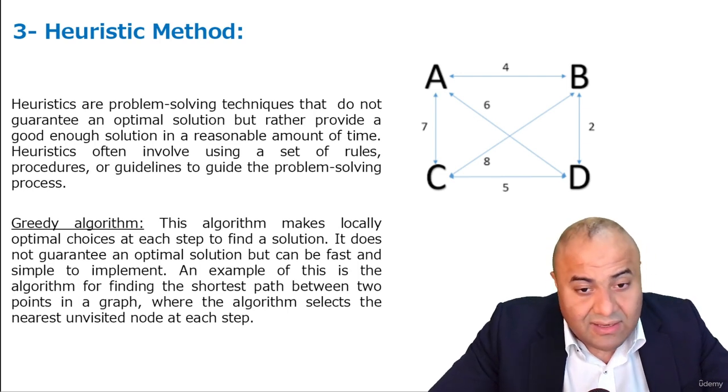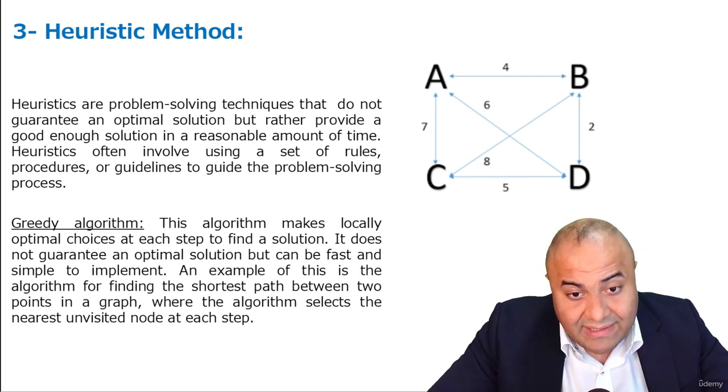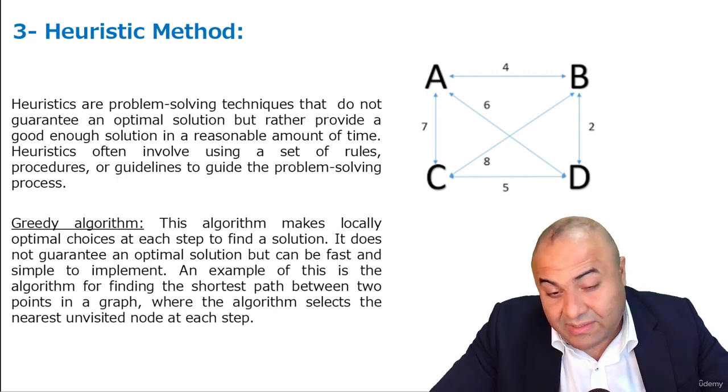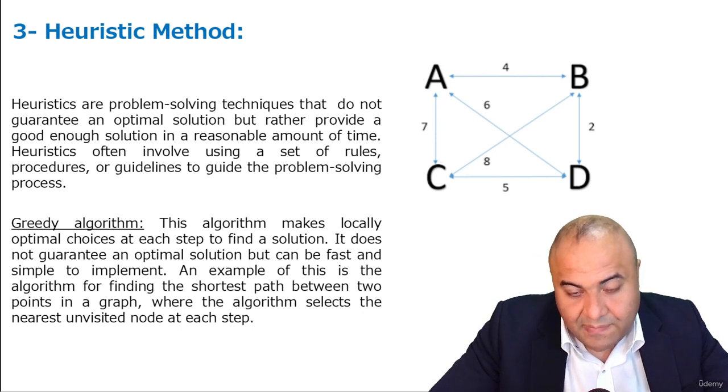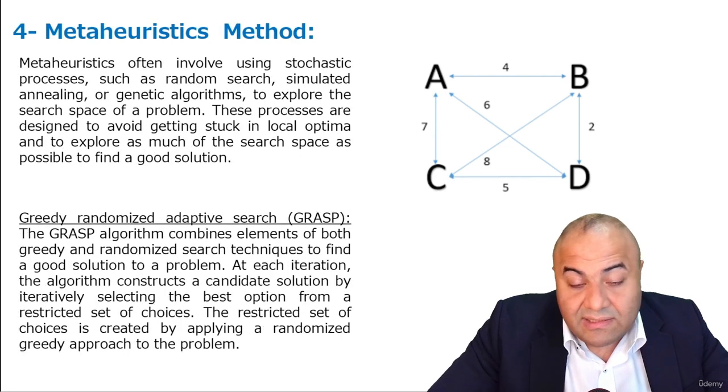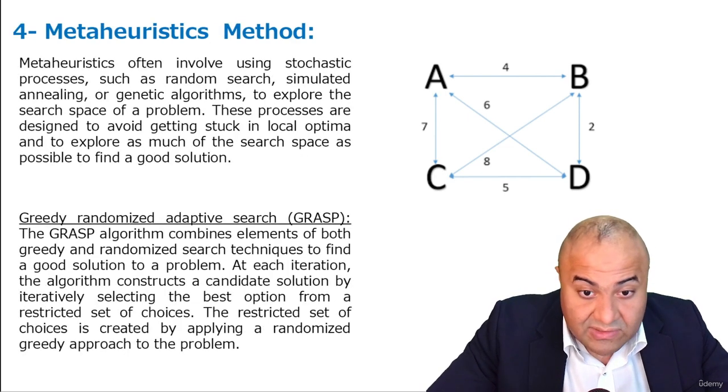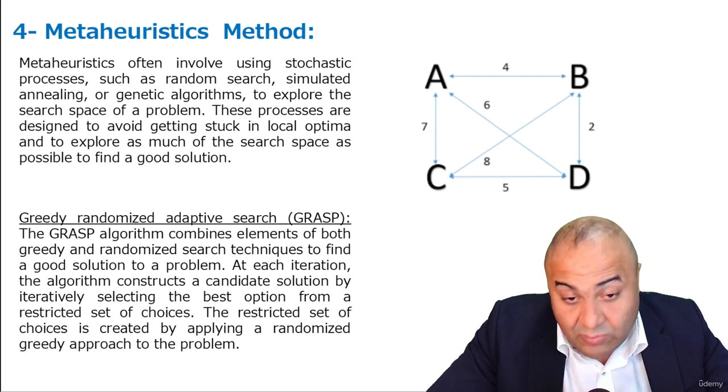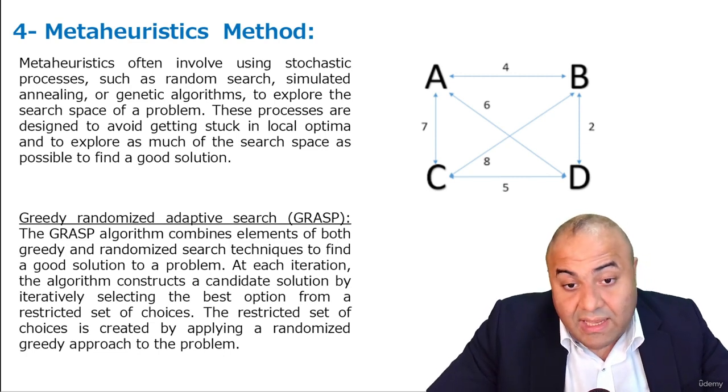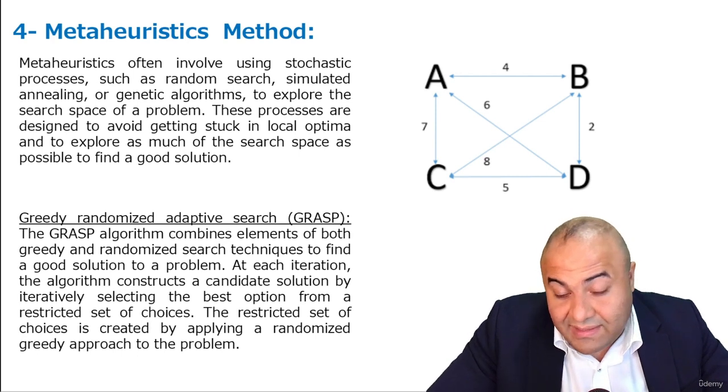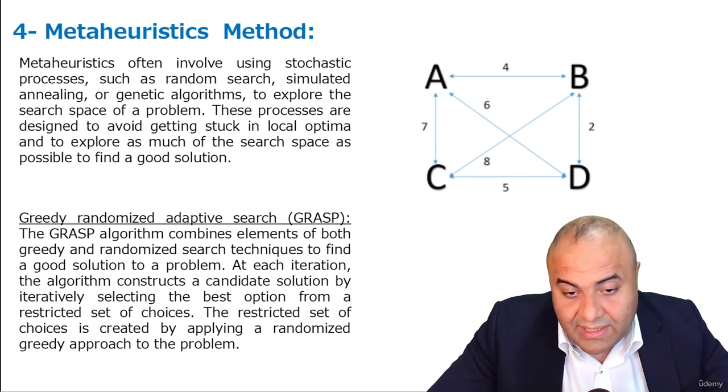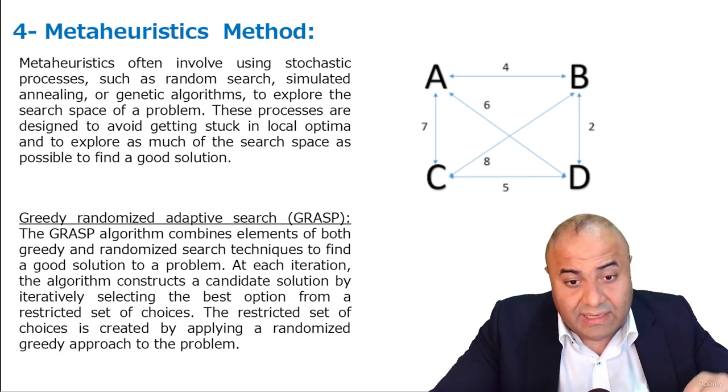So for that, we have to consider not just greedy, but also we try to have a component of randomized feature in this method. And this is why we have meta-heuristic method, which is a kind of greedy but also tries to always explore the solution. We try to explore the solution domain.